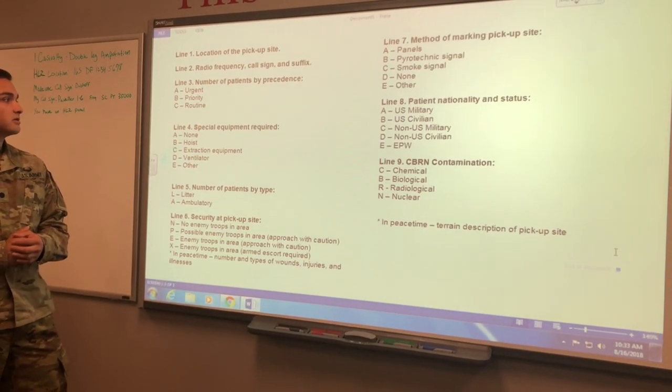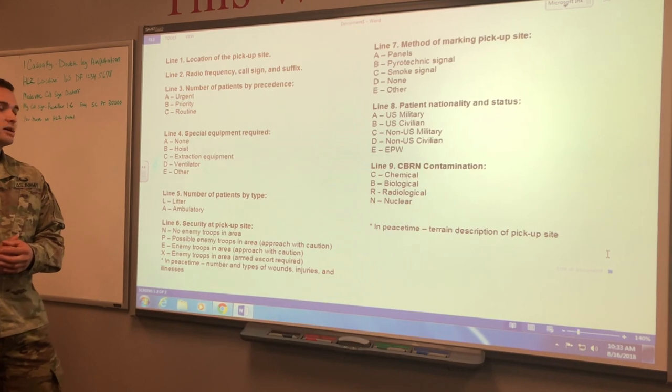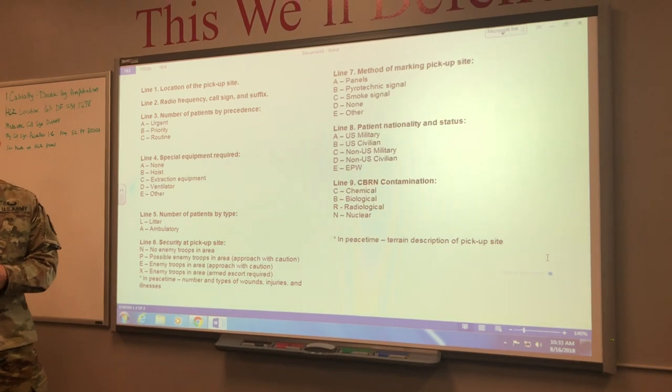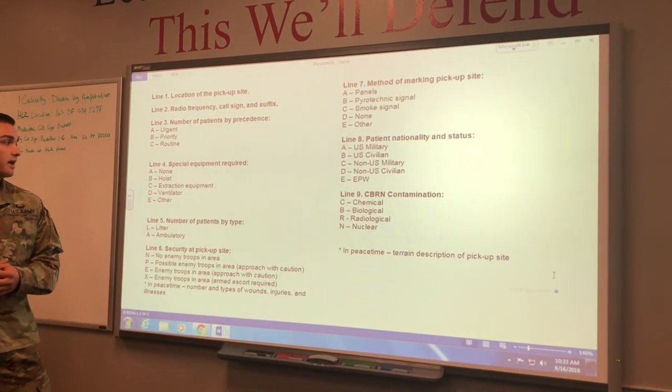Line four is your special equipment required. Alpha none is obvious. Bravo hoist will be used to carry up a casualty to a helicopter if they're on litter or something like that. Charlie is any type of special extraction equipment needed.